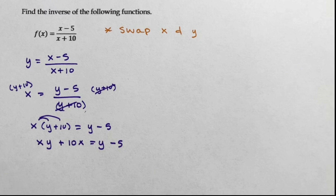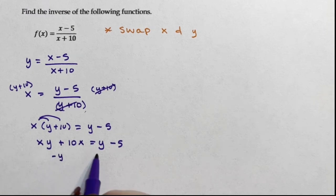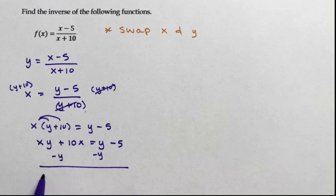Now I want to get all of the x terms on one, or sorry, the y terms on one side and the non-y terms on the other. So I'm going to subtract y from both sides. xy minus y plus 10x equals negative 5.